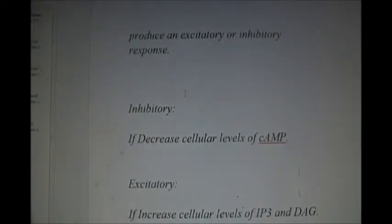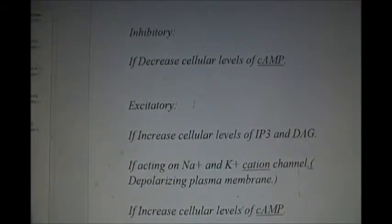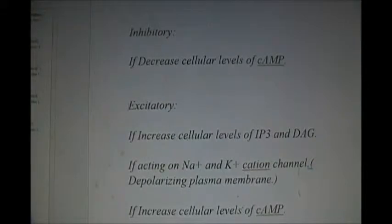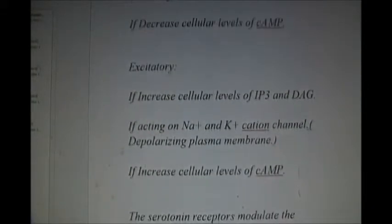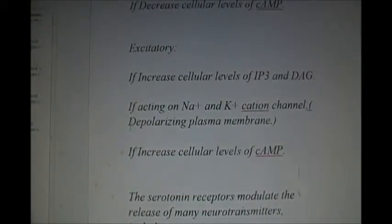How do they produce an inhibitory response? If they decrease the cellular cyclic AMP then it's inhibitory. How do they become excitatory? They increase the cellular cAMP number one. Number two, they increase the cellular level of IP3 and diacylglycerol. And number three, if acting on sodium potassium cation channels that depolarizes the plasma membrane.